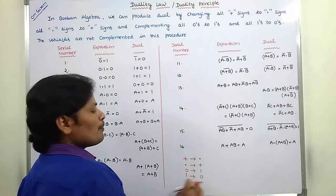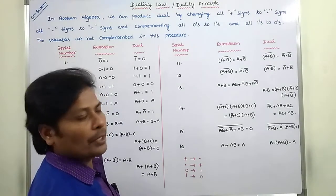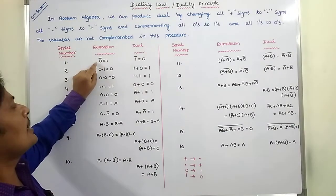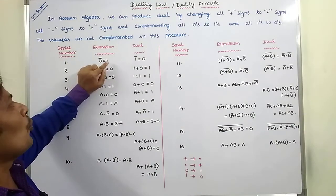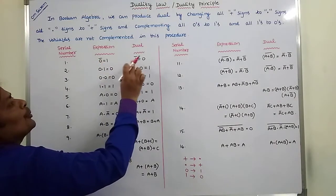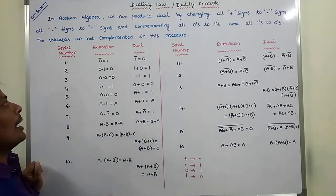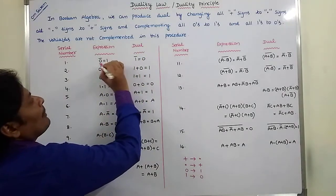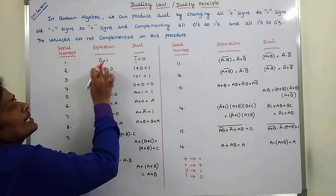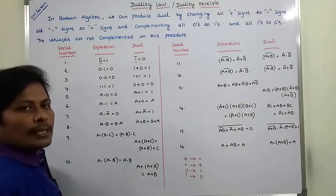This principle is called the duality principle. For example, zero complement is equal to one — here zero is changed to one. One complement is equal to zero — here one is changed to zero.